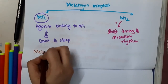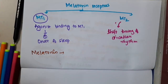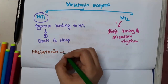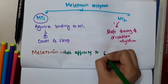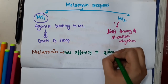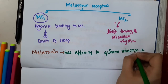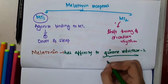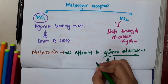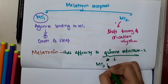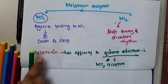The drug melatonin has affinity to quinone reductase 2. Quinone reductase 2 is essentially the MT3 receptor. The function of the MT3 receptor is currently not well established.